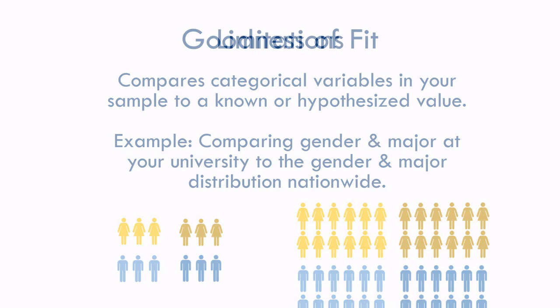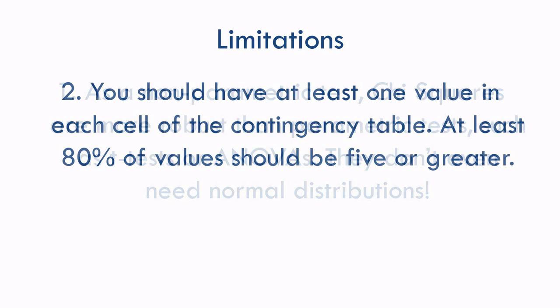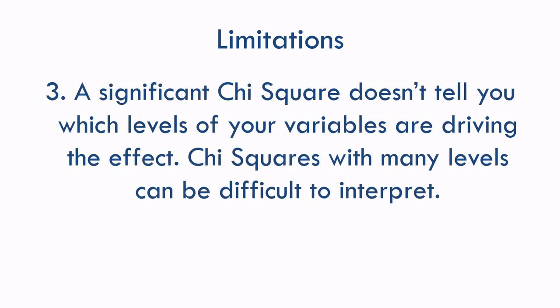Let's talk about limitations and assumptions. As nonparametric tests — meaning they don't use numbers like means — chi-squares are actually robust against the normal limitations for parametric tests like t-tests and ANOVAs. So you don't need normal data or similar group sizes. In fact, if your data violated a bunch of these limitations, doing a chi-square might be your answer instead of a parametric test. But the big limitation with chi-squares is you need to have a value of at least 1 in every cell, and at least 80% of your table values should be at least 5. This could be a problem if you have a very small sample or very low frequency categories. Another limitation is that a significant chi-square doesn't tell you which levels of your variables are driving the effect — with complex designs with many variables or levels, they can be difficult to interpret.